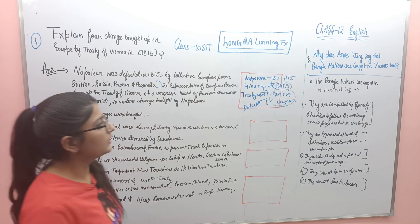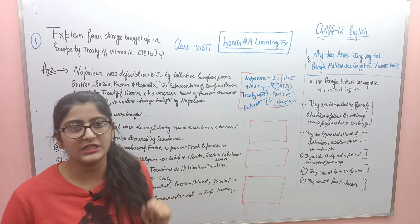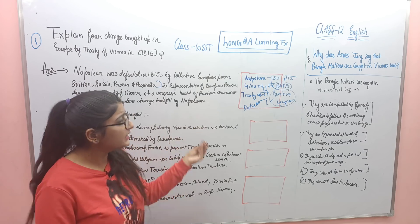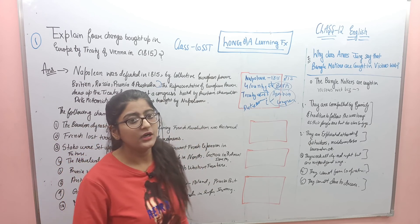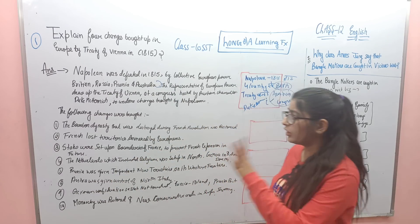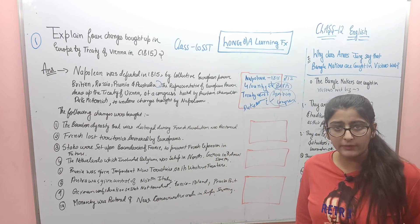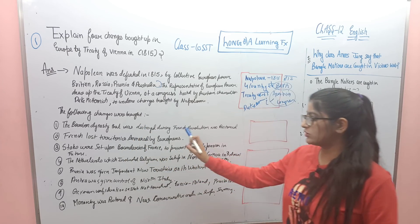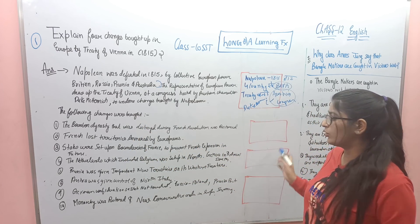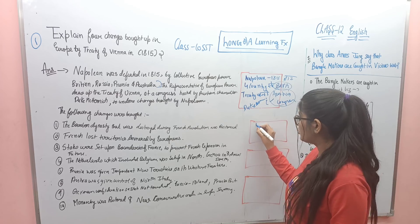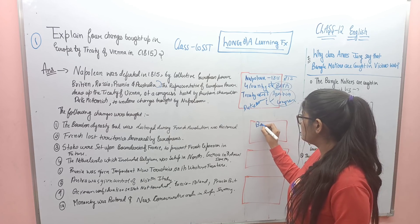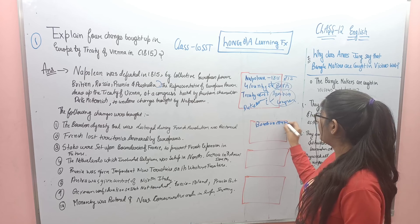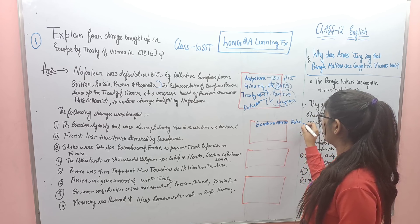Yeh 4 keywords aapko apne question mein likhne hain. Jab aap koi bhi long answer se learn karte ho, aise Hindi-English ka mixture karke yeh chart banakar likhna hai. Next — the following changes were brought: first is 'the Bourbon dynasty was restored during the French Revolution.' Toh kya ho gaya? Bourbon waapas aa gaya — 'Bourbon restore.'